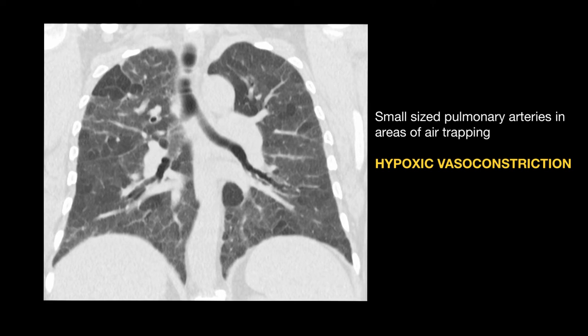The importance of the small blood vessel is that in areas of reduced ventilation due to air trapping, this leads to hypoxia of the lobule itself, and the pulmonary artery responds to a hypoxic environment by undergoing pulmonary arterial vasoconstriction.